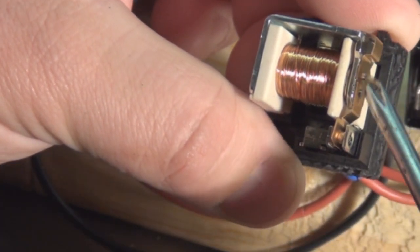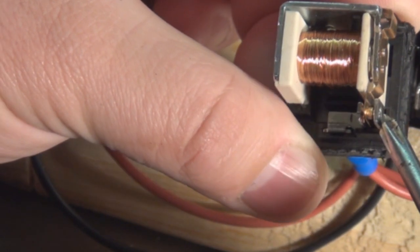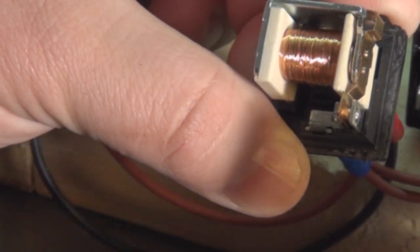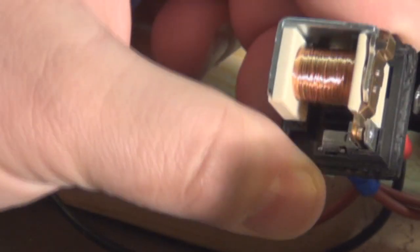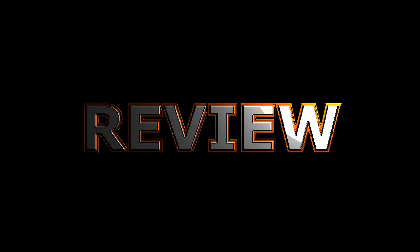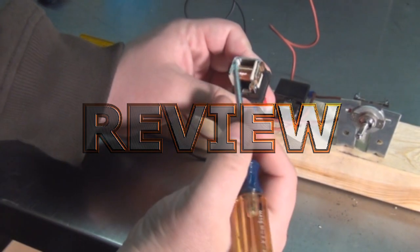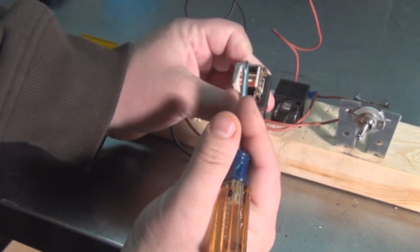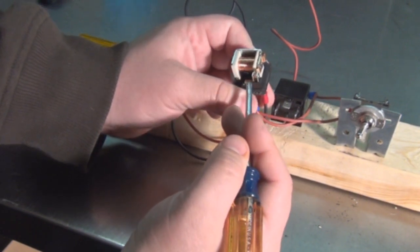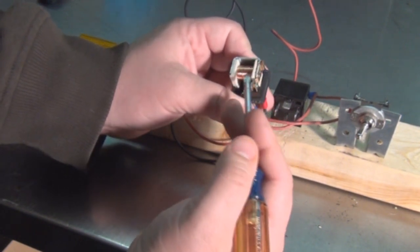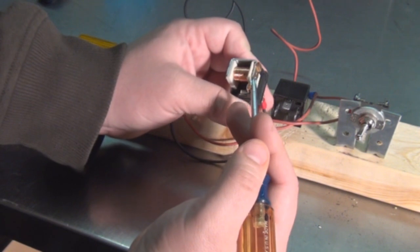This brings the switch back to this contact. This contact just keeps it in place. It is not really a contact. This will be your power side and this will be your load side. What happens is when you energize the electromagnet.